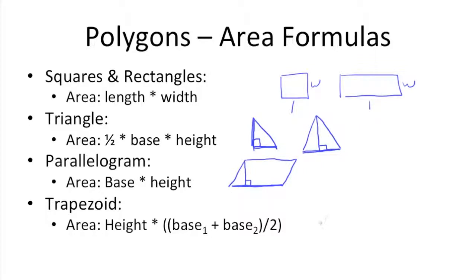For trapezoids, the area is the height times base 1 plus base 2 divided by 2. Written out, it would look like this. And these terms refer to the base here on the bottom, the base on top, and then the height would just be this drop down from the vertex here down to one of the bases forming a right angle.